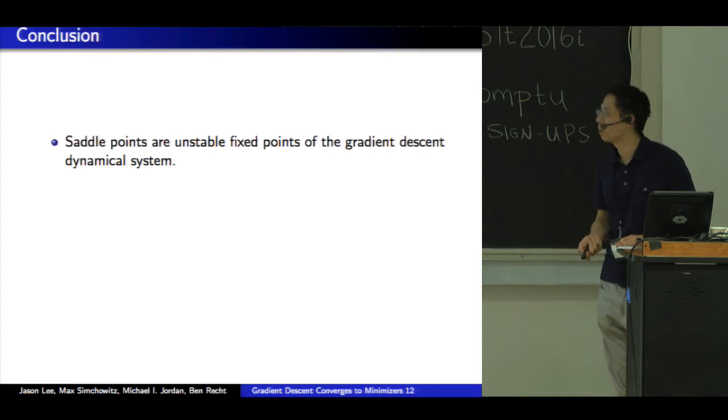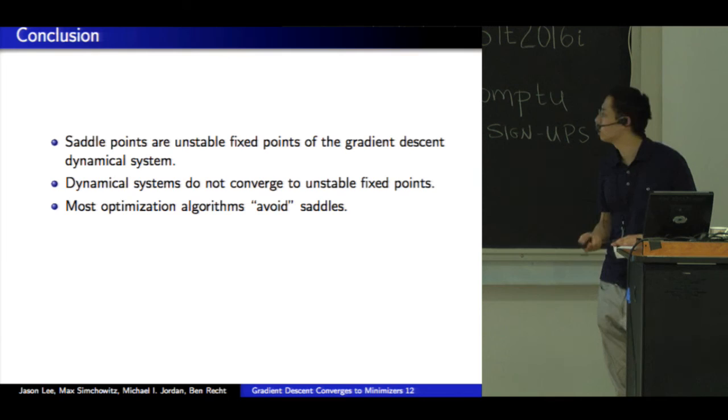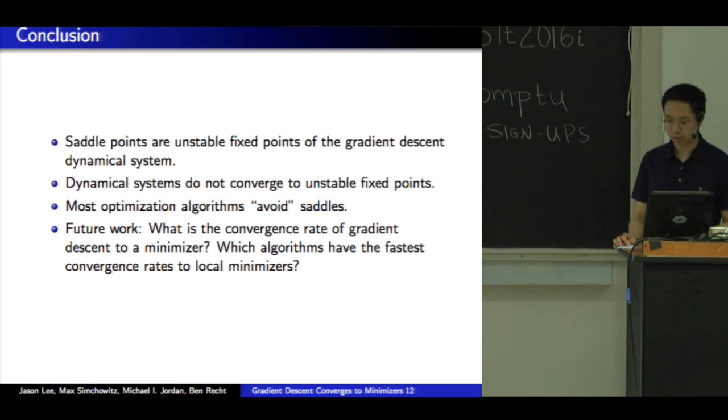So to conclude, saddle points are unstable fixed points of gradient descent dynamical system. Dynamical systems generically do not converge to unstable fixed points. They converge to stable ones. And thus, most optimization algorithms avoid saddles. So for future work, what we haven't understood yet is the convergence rate of gradient descent to minimizer. And we also don't understand which algorithms are fastest. And I'll conclude with that.